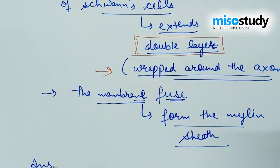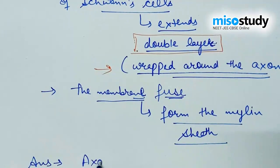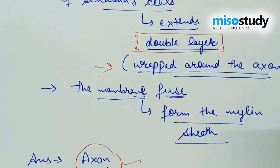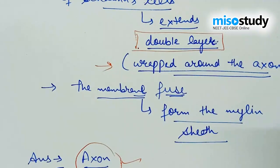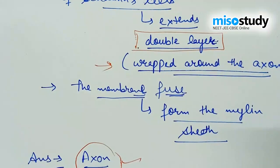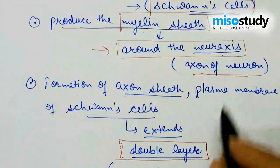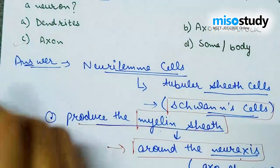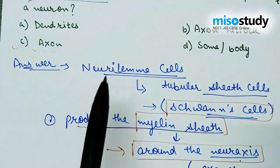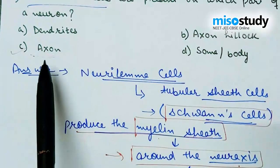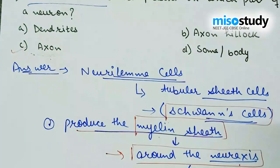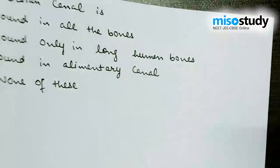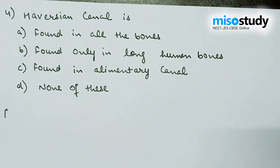According to the discussion, the right answer for question three is the axon, because Schwann cells are dedicated to producing the myelin sheath. That myelin sheath is focused on protection and layering around the neural axis — the axon of the neuron. So Schwann cells are present on the axon. Let's discuss the next question.